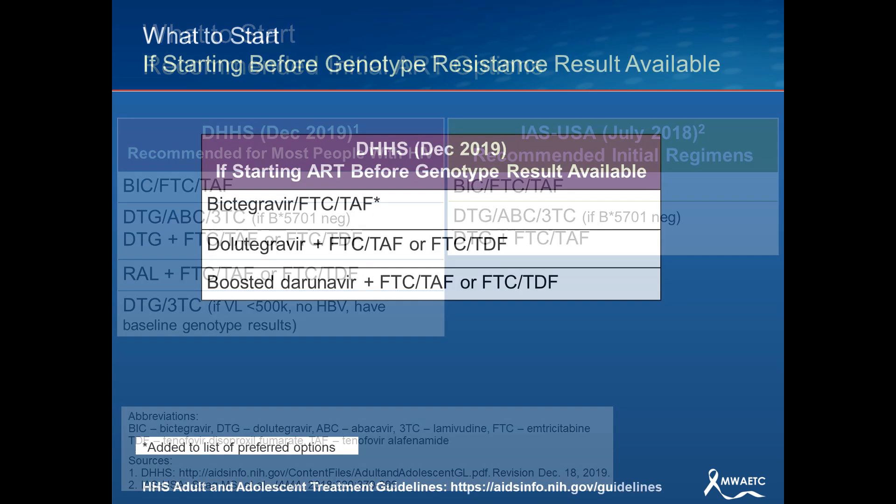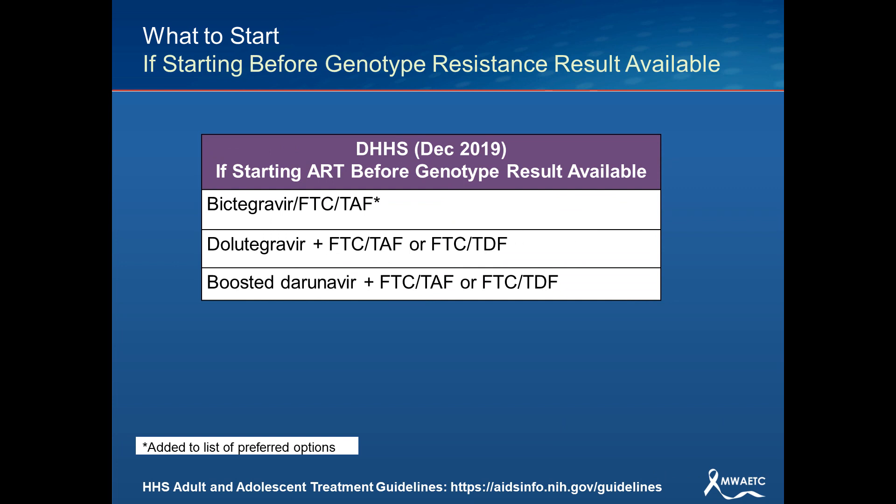If you are starting ART before genotype results are available — which is very reasonable, especially in high-priority clinical situations — we should be reaching for a high-barrier-to-resistance integrase inhibitor like bictegravir or dolutegravir, or a high-barrier resistance agent like boosted darunavir plus two NRTIs, generally emtricitabine and tenofovir alafenamide (TAF). We would not usually reach for abacavir in this scenario because of the need for HLA-B5701 testing and its susceptibility to resistance mutations like M184V. The only change here is that bic/FTC/TAF was added to the list of recommended options while waiting for genotype results.